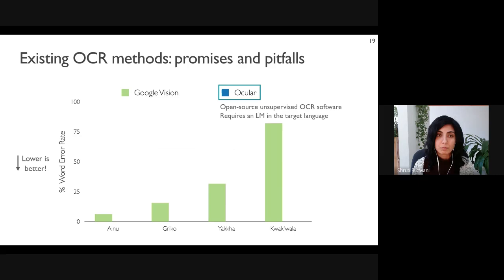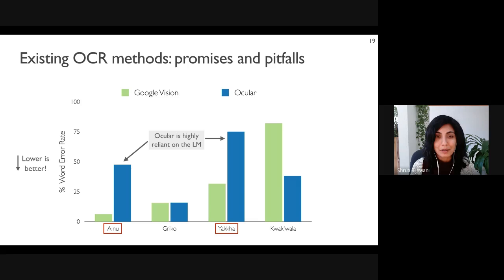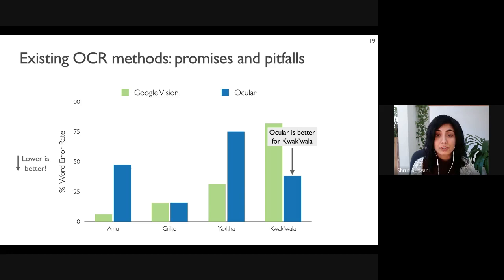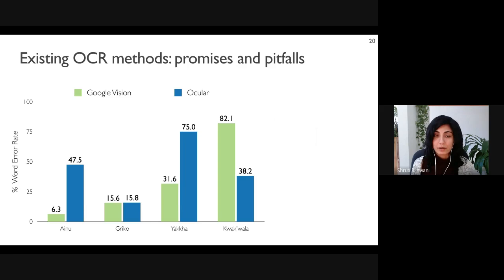We also look at Ocular, an open-source unsupervised OCR software. Ocular requires a language model in the target language but doesn't need any transcribed images for training. We train Ocular's language model with a small number of transcriptions from our dataset for each language. We see that it is quite reliant on the quality of the language model — Ainu and Yakha, which have relatively less data, perform considerably worse than the Google Vision system. However, Ocular is considerably better than the off-the-shelf tool for the Kwakwala dataset.